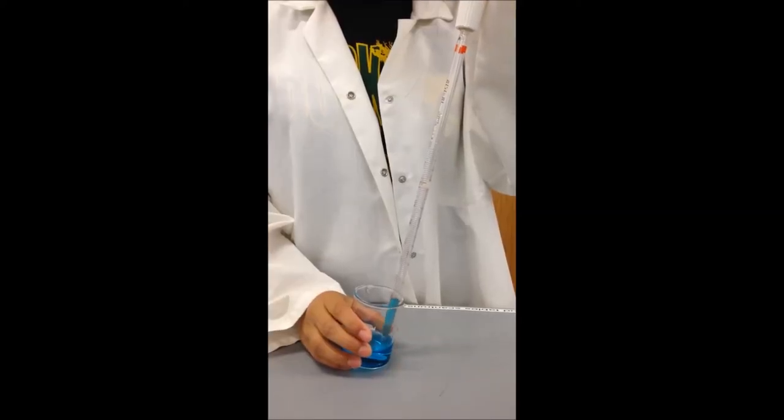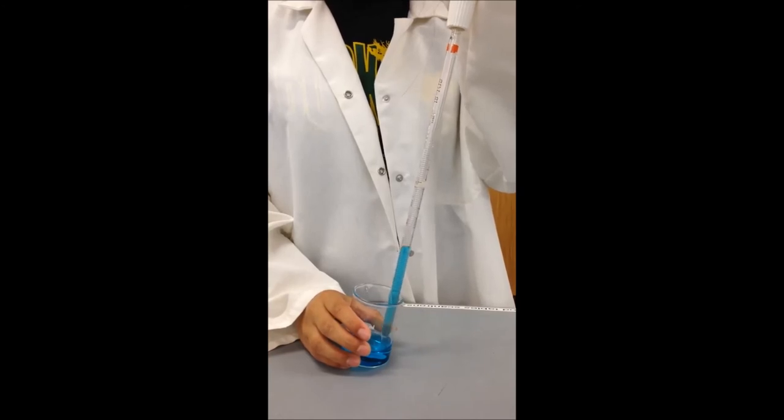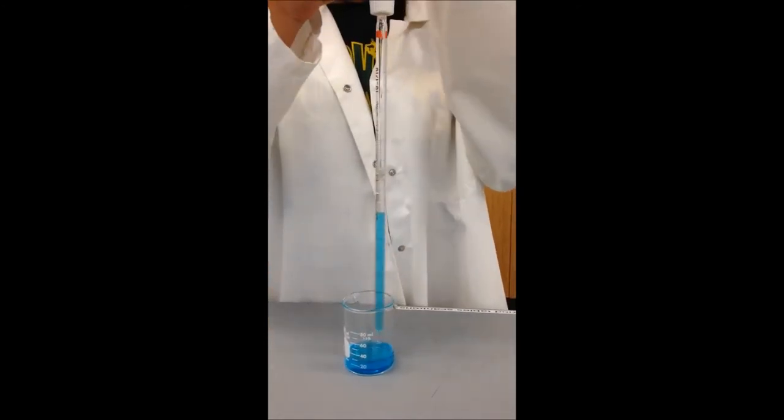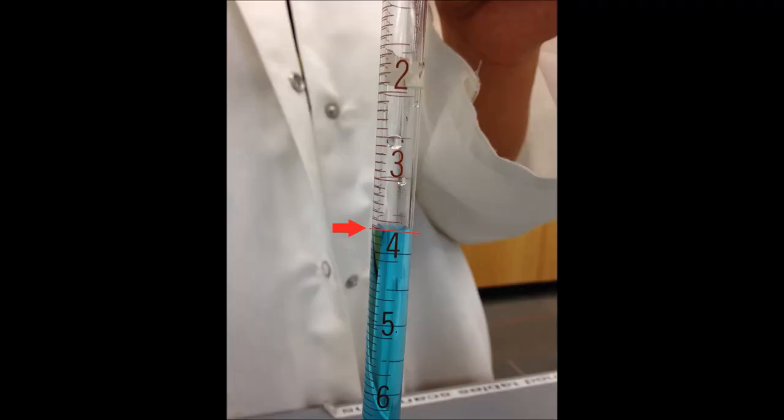Finally, we are looking at the 10 milliliter glass pipette. This instrument has the same increments as the previous two, so therefore it should be measured with the same accuracy. The volume of the liquid is 4.29 milliliters.